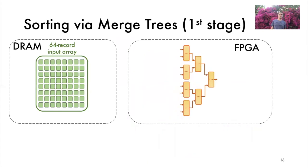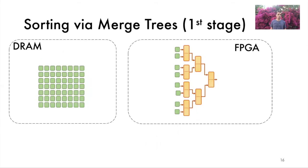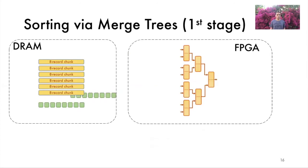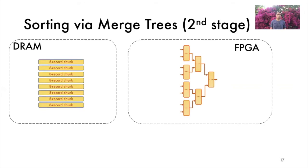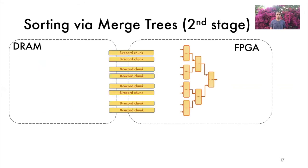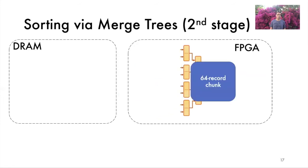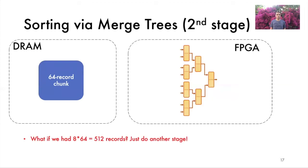Let's illustrate how merge trees can be used to sort a 64 record array. We load the first eight records from DRAM onto the FPGA, merge them, and return the resulting eight records sorted chunk to DRAM. And repeat. Notice that during these steps, we stream the entire input array onto the FPGA and back into DRAM. We will call each such streaming cycle between the DRAM and FPGA a merge stage. Therefore, the figure now shows the state of the sorter after the first merge stage. For the second merge stage, we merge the eight record sorted chunks into a single sorted array. To sort even more data, we would just perform more merge stages.